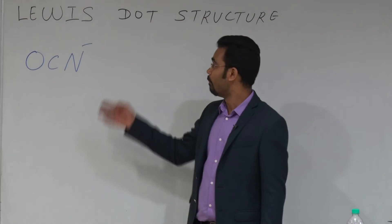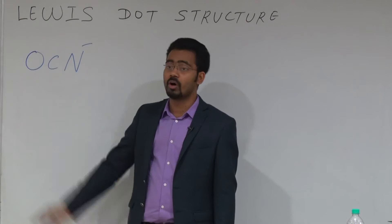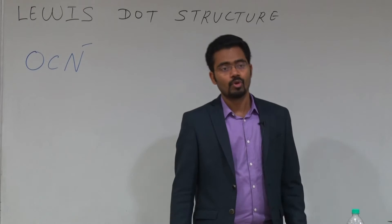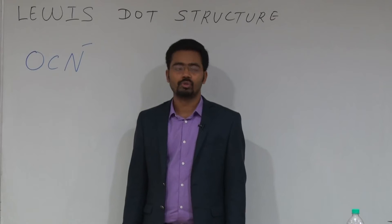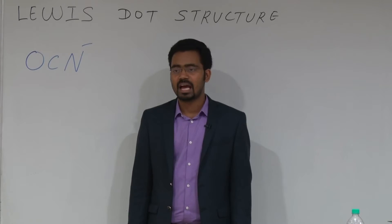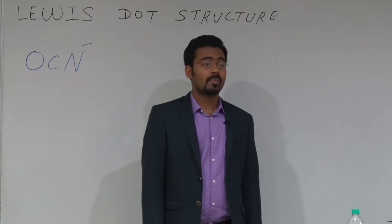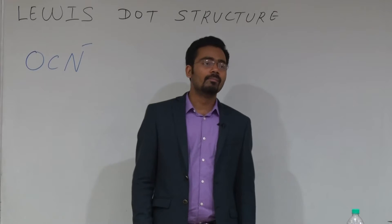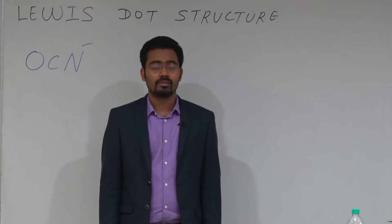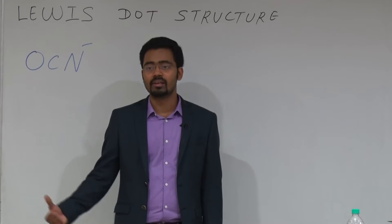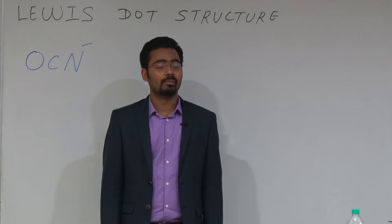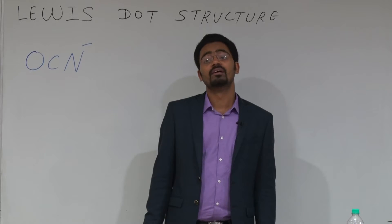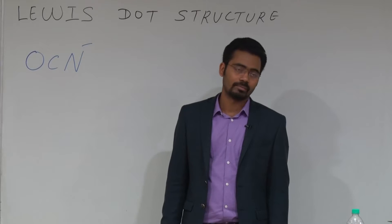There are two possibilities: the minus sign will be on nitrogen and the minus sign will be on oxygen. You have to identify the central atom. For the Lewis structure, the central atom has the least electronegativity, more bond formation tendency, and is least in number. Carbon has the maximum bond formation tendency and least electronegativity, therefore carbon is the central atom.